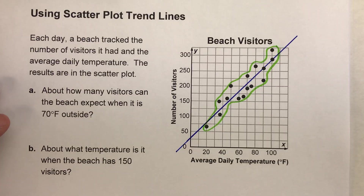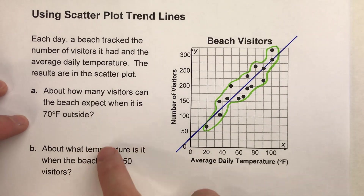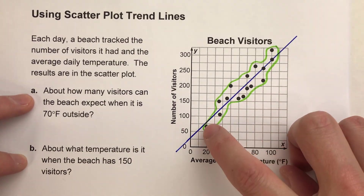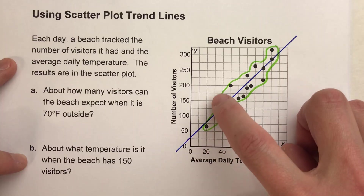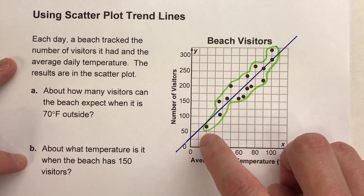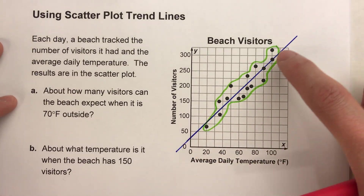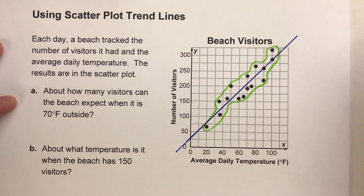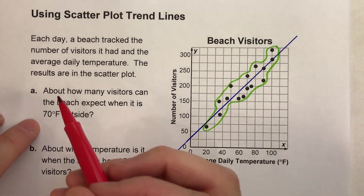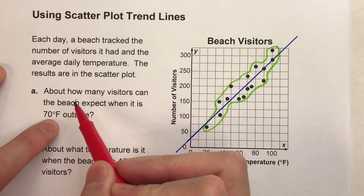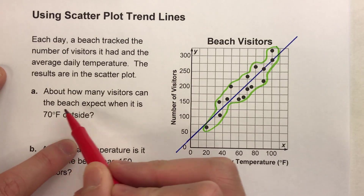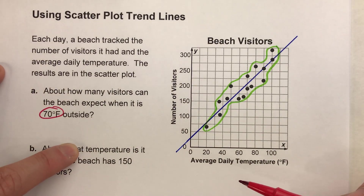The reason why this is helpful is that when we answer our questions about the data, we can ignore all of the little dots and just focus on the trend line, which makes our job a lot easier. First question: about how many visitors can the beach expect when it's 70 degrees Fahrenheit outside?